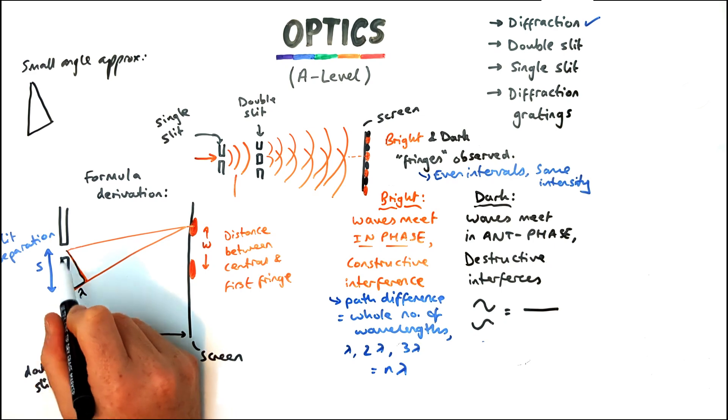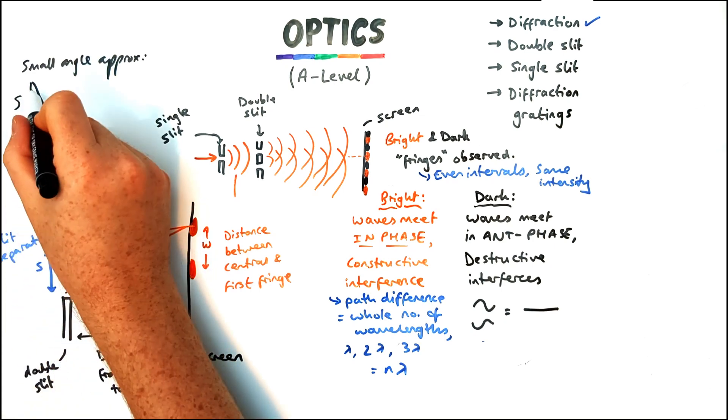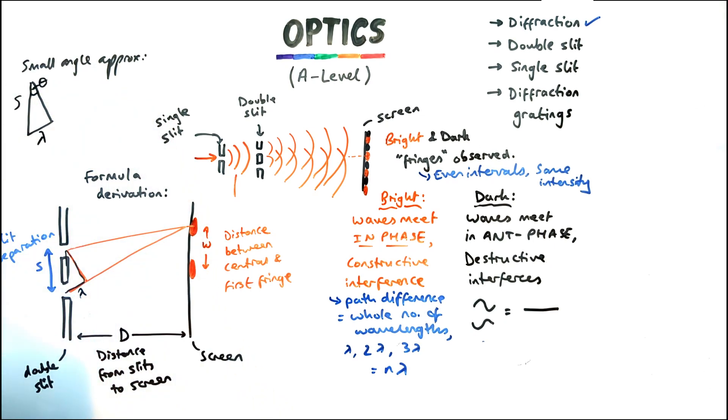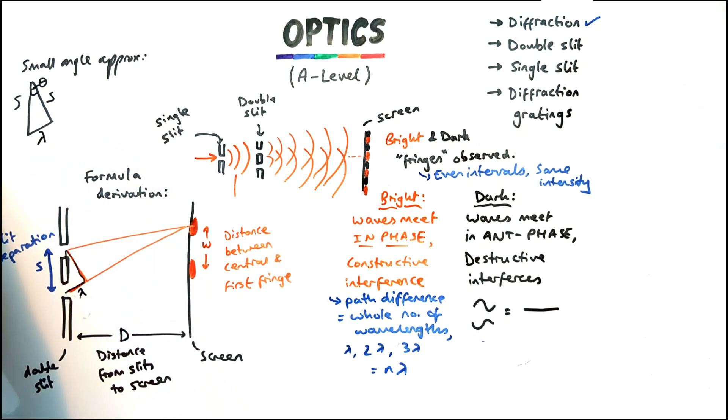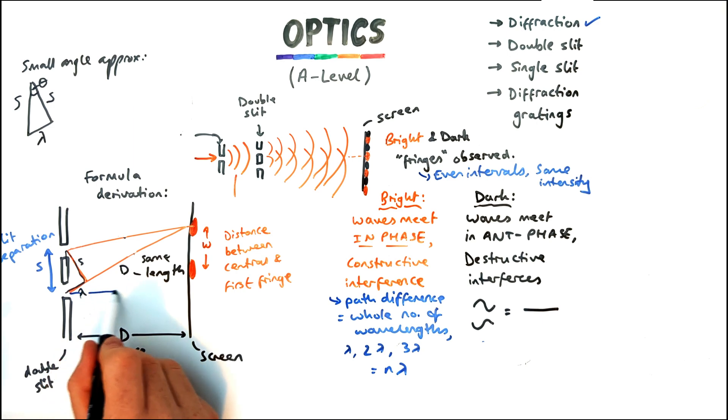Now with the first triangle I've drawn on the screen I've got distance S as my left hand side. Now the next length of the triangle we can also say is S even though it won't be exactly the same. Because the angle is small it means that we can make that assumption. And we said it's one wavelength path difference therefore the opposite side is going to be one wavelength.